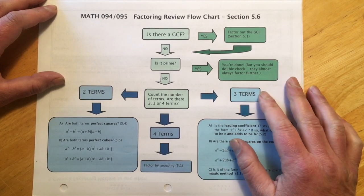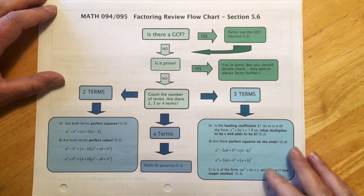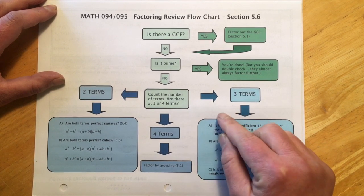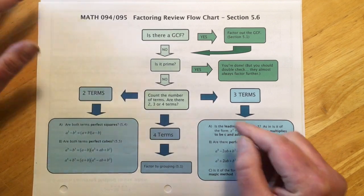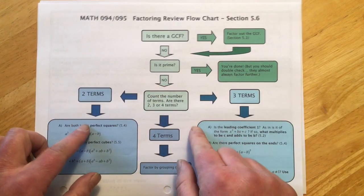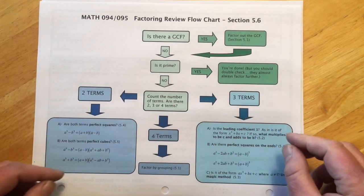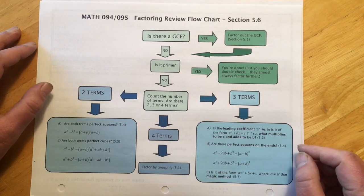If it has three terms, there's one of three things it's going to do. It's either going to lead with a one, so it'll look like just a plain old x squared up front. And that's the kind where we just do the parentheses. We set up our x's and figure out what multiplies to n, adds to the middle. We saw that in 5.2.